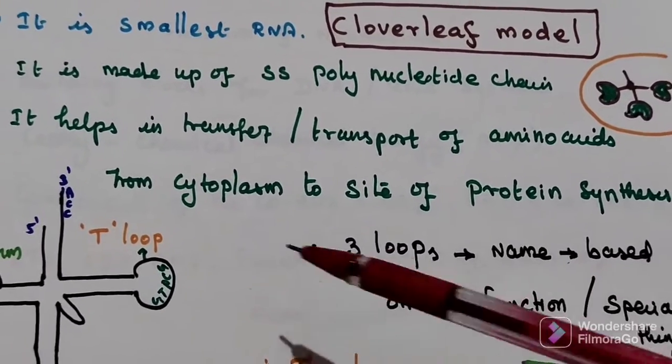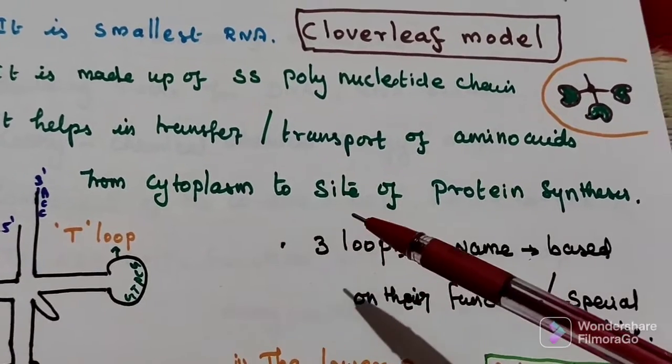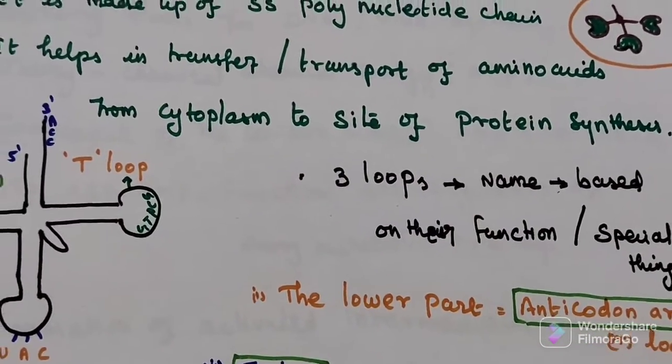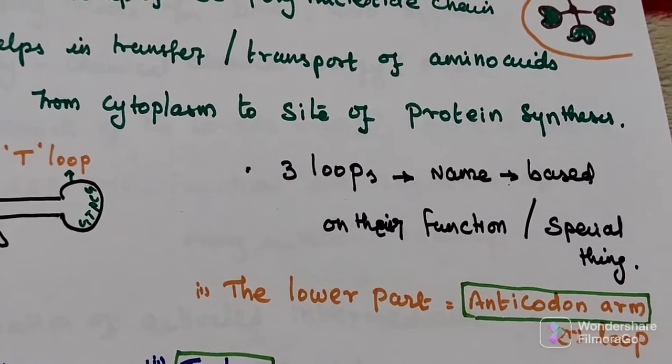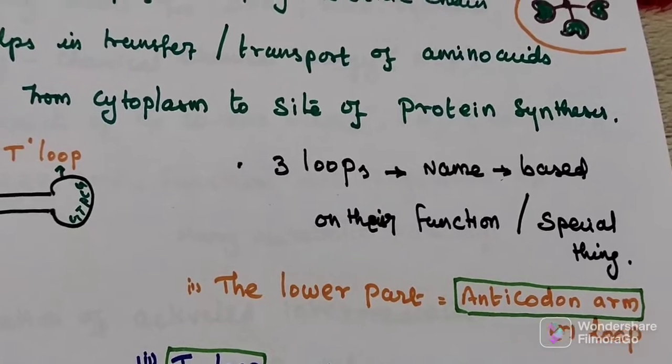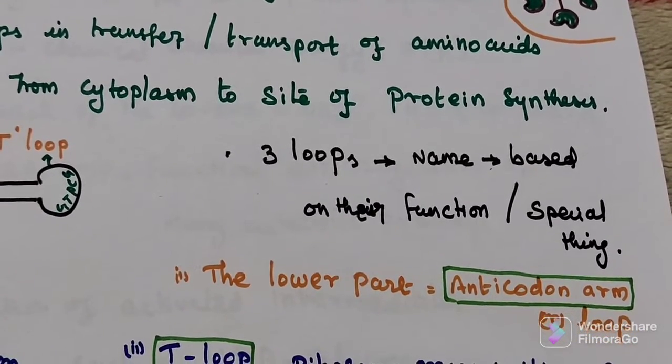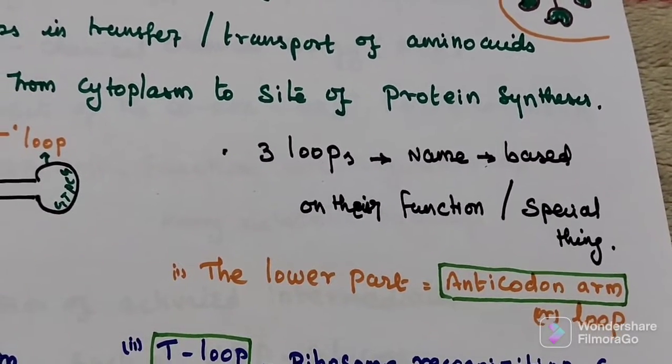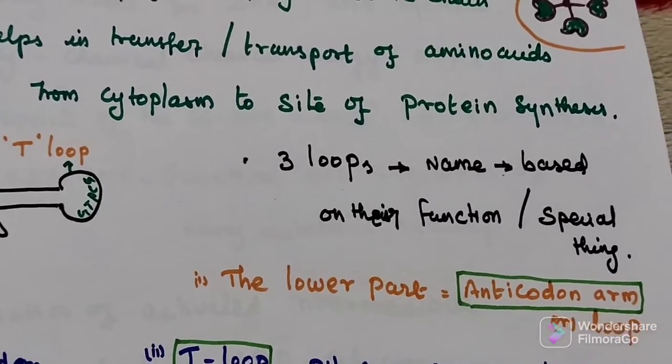What is the main role? Transfer of amino acids from cytoplasm to where protein synthesis occurs. Here, three loops are given, which have been given names based on their function or some special characteristics.